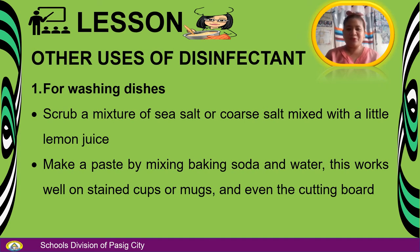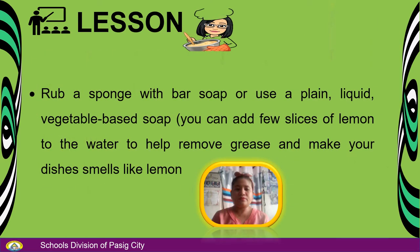For washing dishes, grab a mixture of sea salt or coarse salt mixed with a little lemon juice. Make a paste by mixing baking soda and water — this works well on stained cups or mugs and even the cutting board. Rub a sponge with bar soap or use plain liquid vegetable-based soap. You can add a few slices of lemon to the water to help remove grease and make your dishes smell like lemon.